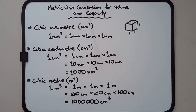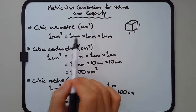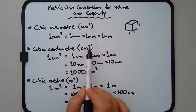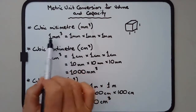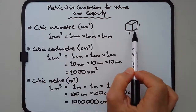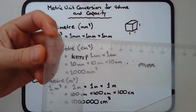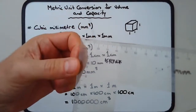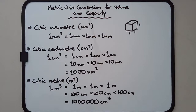The three main units of volume are the cubic millimeter (mm³), the cubic centimeter (cm³), and the cubic meter (m³). The 'three' means three-dimensional. One cubic millimeter is a cube that's one millimeter by one millimeter by one millimeter — it's very small, about the size of a grain of sugar.